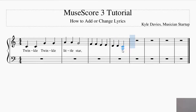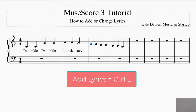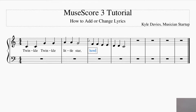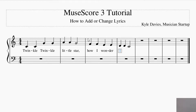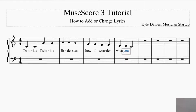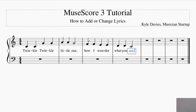Okay, so now we've got those notes in there. Let's say you want to get back to putting in lyrics. Instead of going up to Add in the menu, you can use the shortcut: select the note you want to start on, then press Ctrl+L, and it will add the lyrics cursor there. So: 'how,' space, 'I,' hyphen, 'won,' hyphen, 'der,' space, 'what,' space, 'you,' space, 'are.'